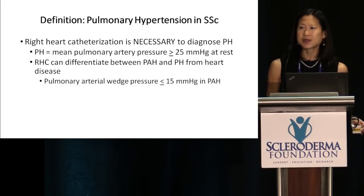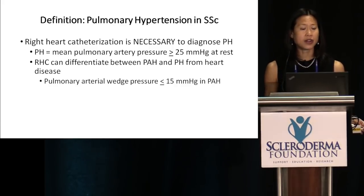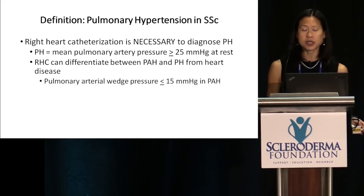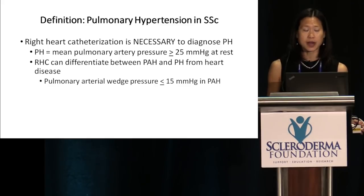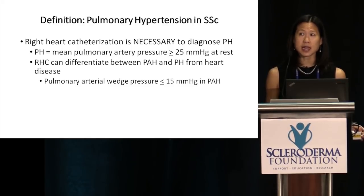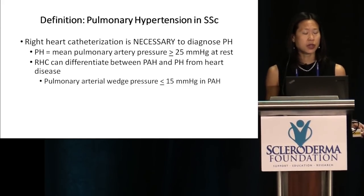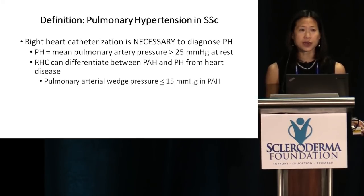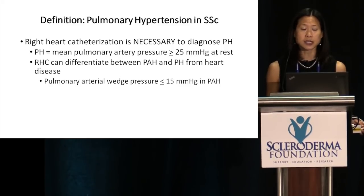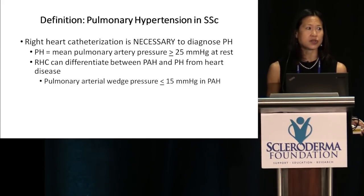Right heart catheterization is absolutely necessary to diagnose pulmonary hypertension — a point I'll make repeatedly during this talk. By right heart catheterization, pulmonary hypertension is defined as a mean pulmonary artery pressure of at least 25 millimeters of mercury at rest. RHC is also critical to differentiate types of PH. Looking at the pulmonary arterial wedge pressure differentiates PAH from pulmonary hypertension related to heart disease — a wedge pressure less than 15 millimeters of mercury is required for the diagnosis of PAH.